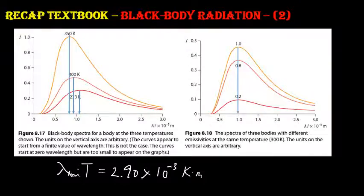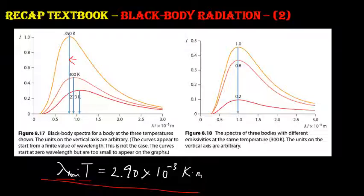Looking at the two graphs in the taskbook: the left graph shows three trials at three different temperatures. Using Wien's Displacement Law, higher temperature gives a smaller peak wavelength, which matches the graph results.